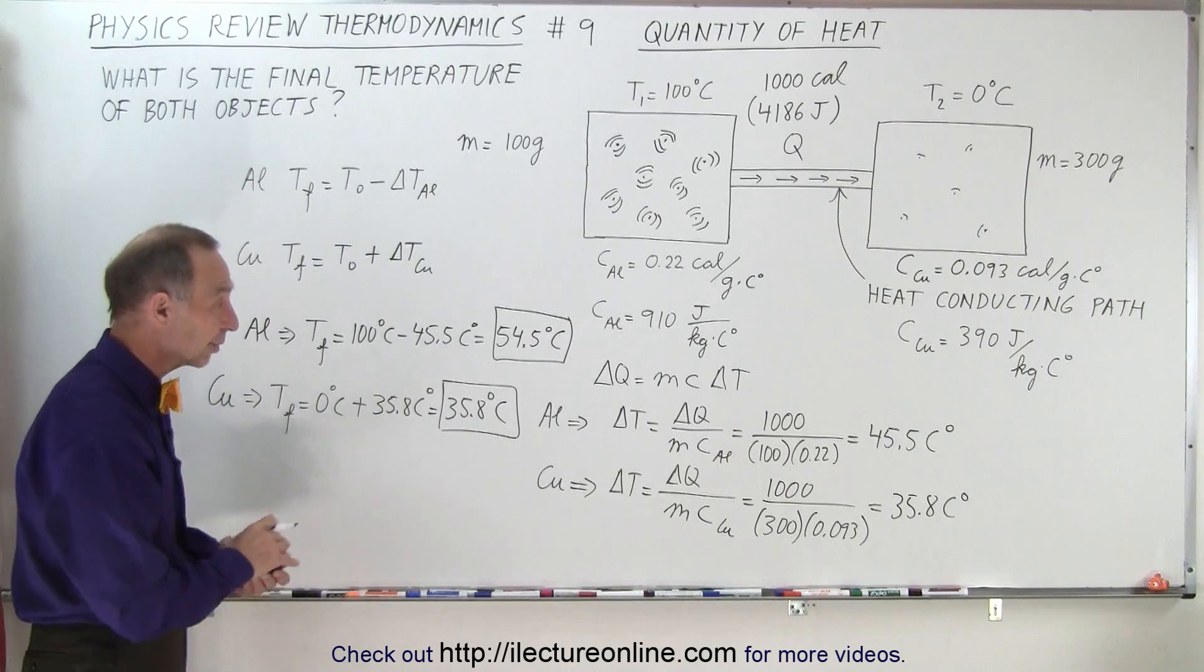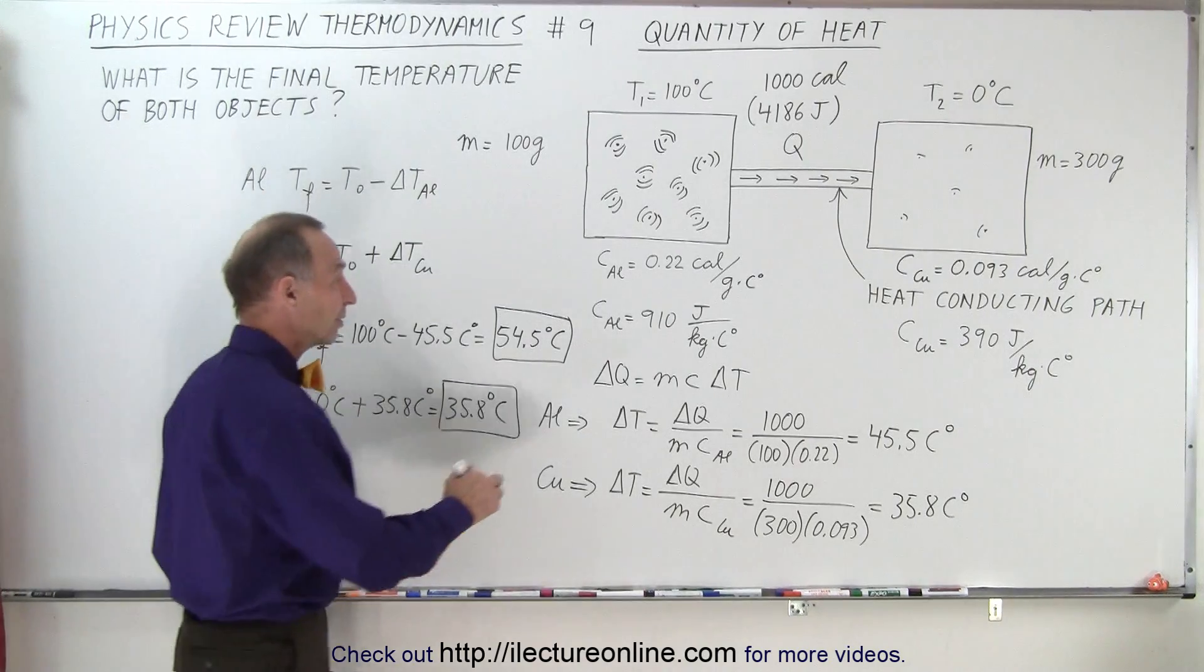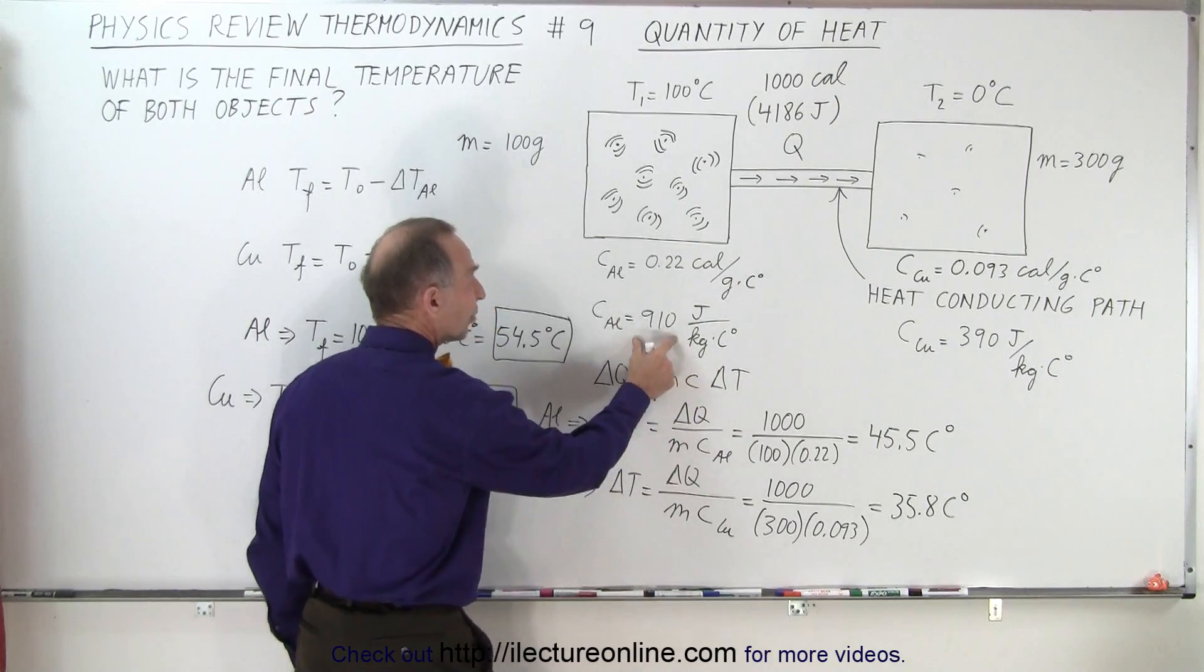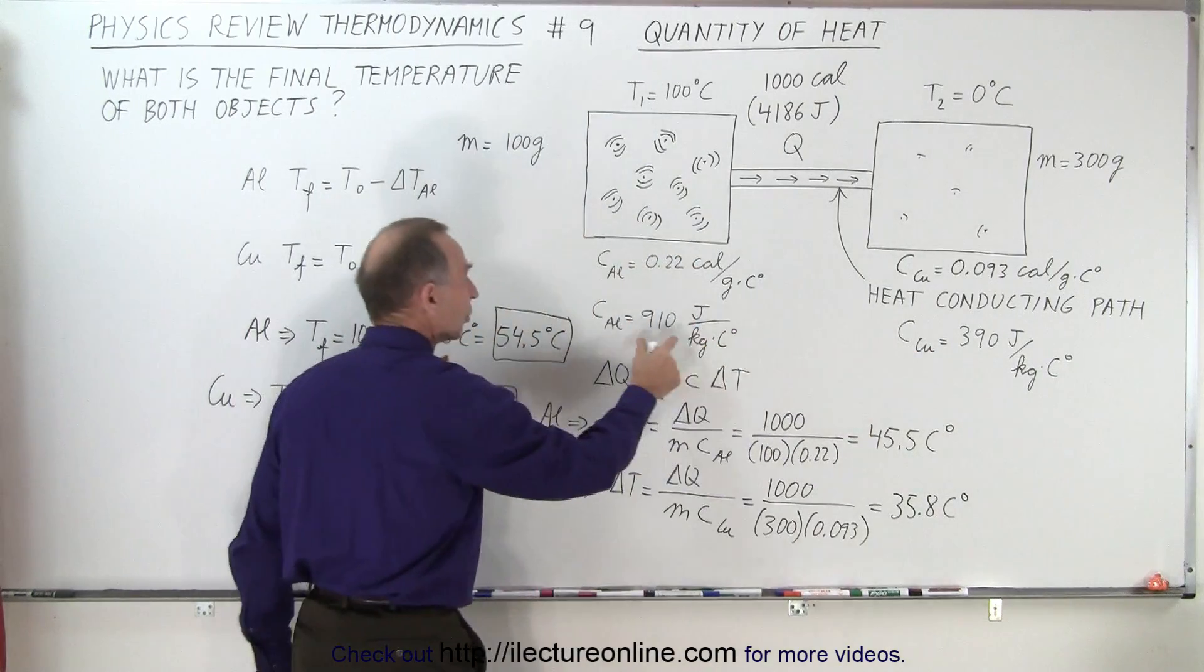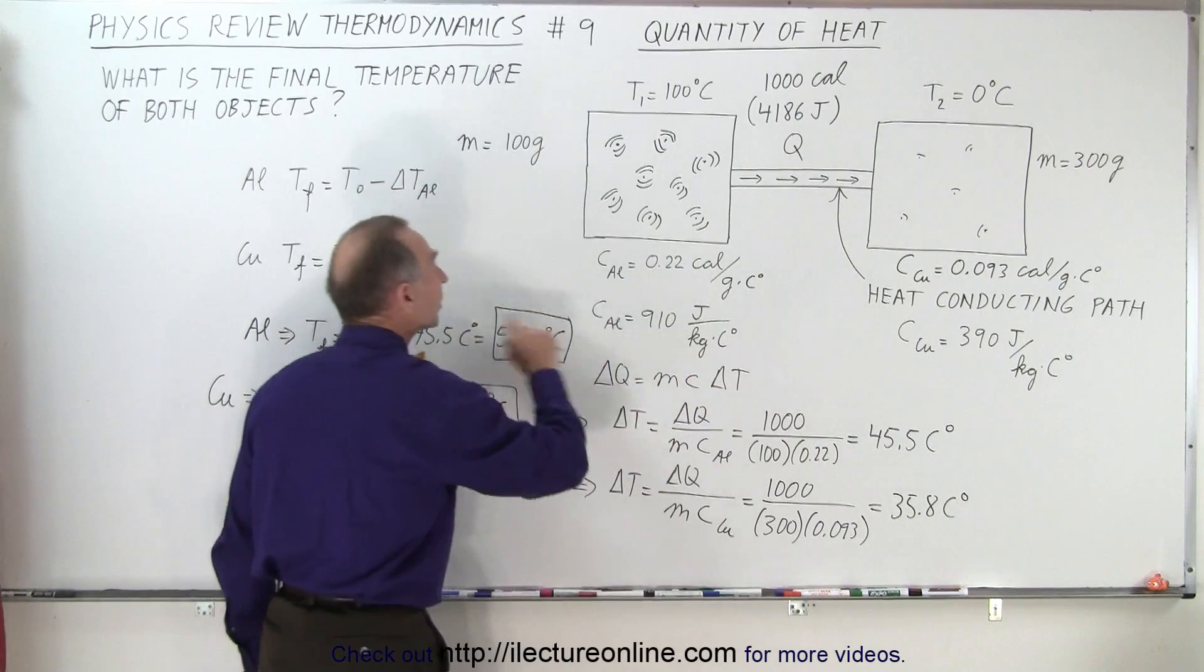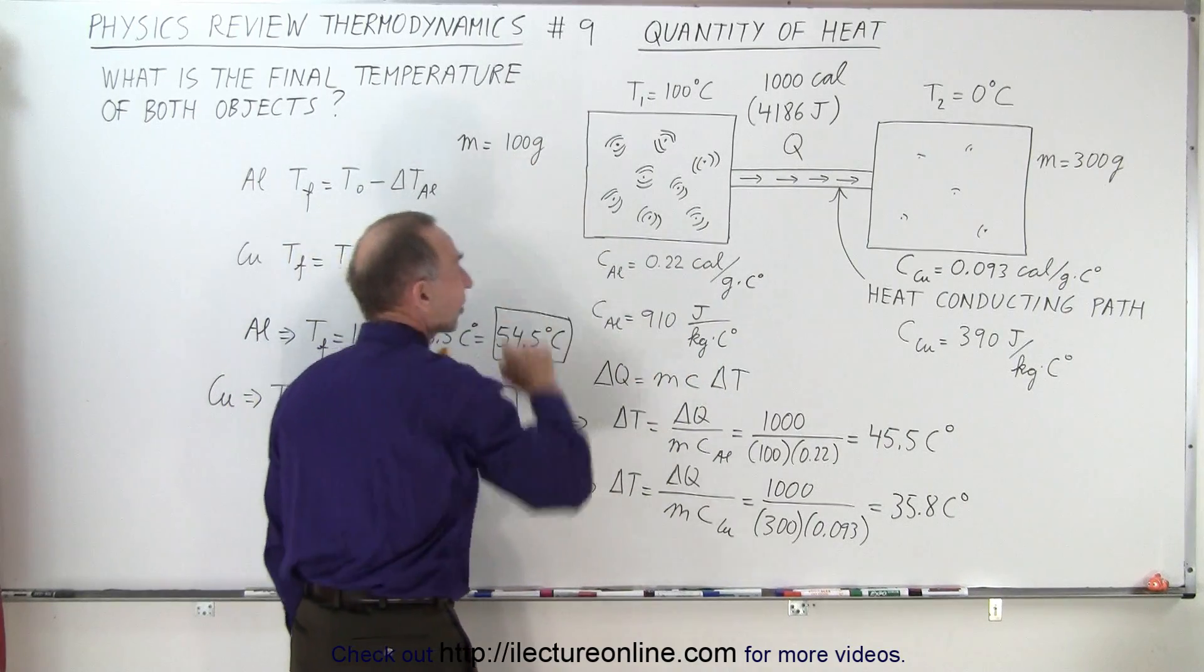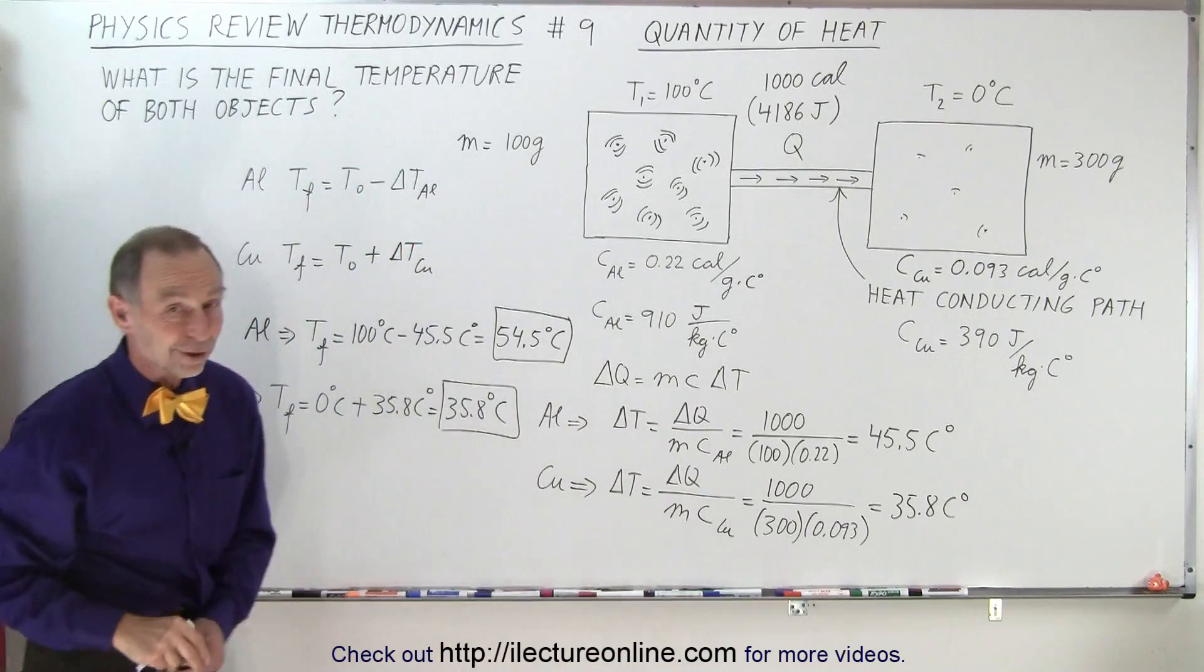And if you don't like to use calories and grams, you'd rather use the metric units, joules and kilograms, try it again, but then use this for the specific heat of the two substances, for copper and for aluminum here, and then convert this to kilograms instead of grams, and you should get the very same result.